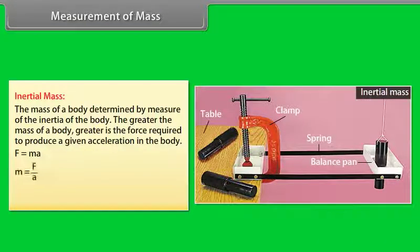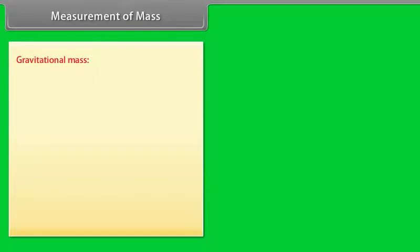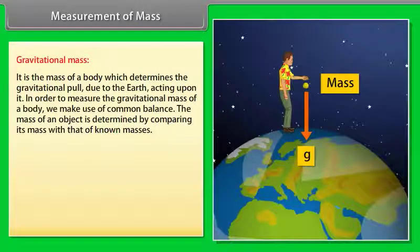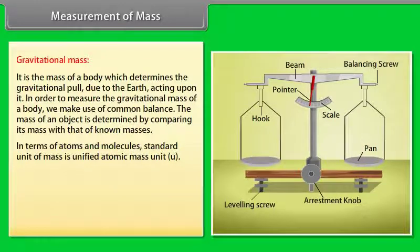The greater the mass of a body, greater is the force required to produce a given acceleration in the body. F is equal to M A, or M is equal to F upon A. Thus a very heavy body has a larger inertial mass than a light body. In order to measure the inertial mass of a body, we make use of inertial balance. Gravitational mass: It is the mass of a body which determines the gravitational pull due to the earth acting upon it. In order to measure the gravitational mass of a body, we make use of common balance.